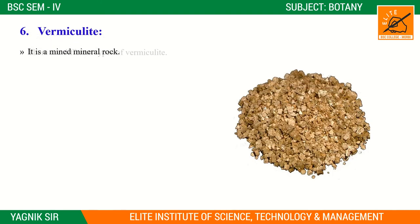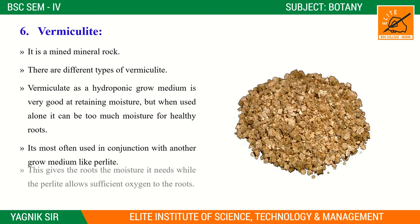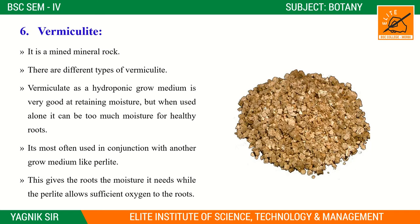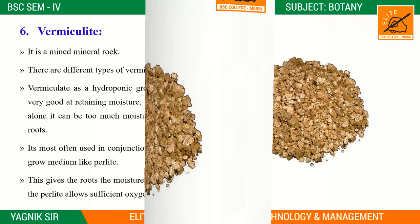Next is vermiculite. Vermiculite is a mined mineral rock and there are very different types of vermiculite. As a hydroponic growing medium, it is very good at retaining moisture. But when used a lot, it can hold too much moisture for healthy roots. It is most often used in conjunction with another growing medium like perlite — vermiculite gives the roots the moisture they need, while perlite allows sufficient oxygen to the roots.